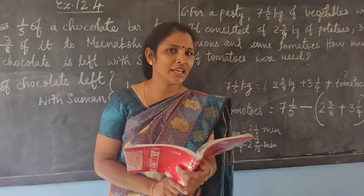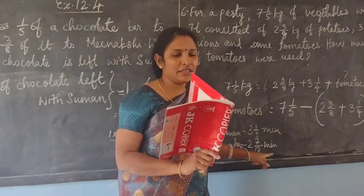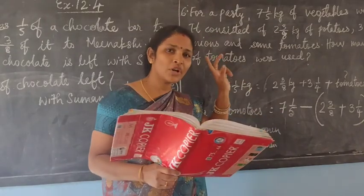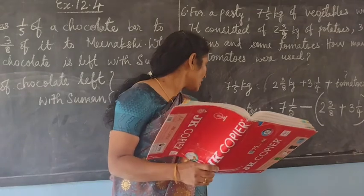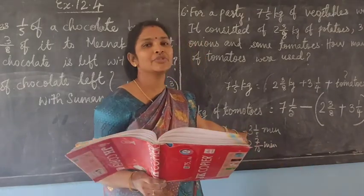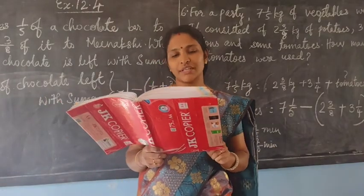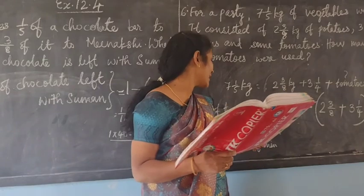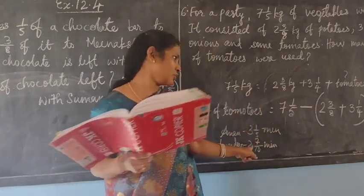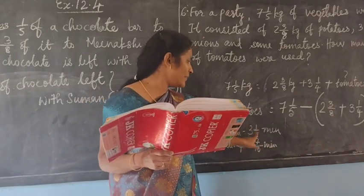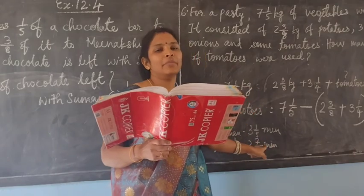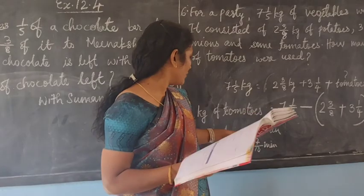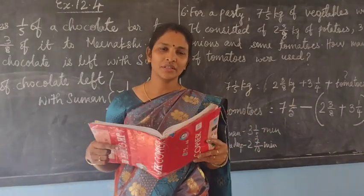Amand took 3 and 1/5 minutes and Amanddeep took 2 and 7/10 minutes. Who is the winner? Amanddeep, who took less time. Your question is: who took more time? Compare the whole numbers — one is 3 and the other is 2 — so Amand took more time. Now, how much more time? We have to find the difference of time they took: 3 and 1/5 minus 2 and 7/10. When you do this full process, you will get how much more time Amand took. Hope all of you understood. Thank you.